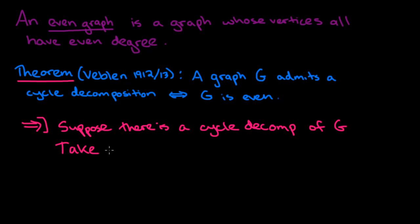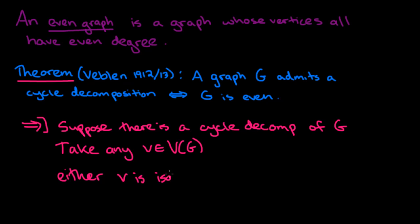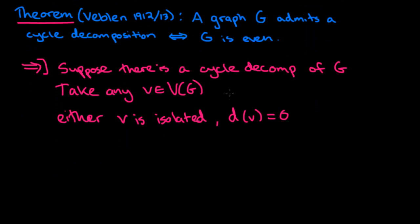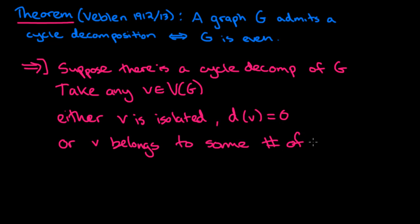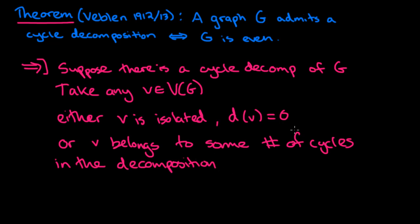Take any vertex in the graph. We're going to look at the degree of this vertex. Either V is isolated — because we didn't say whether or not the graph was connected, so it could be disconnected — in which case the degree of V is zero. Or, if it's not isolated, it's going to have to lie on some cycles. It could belong to only one cycle or to many cycles. Let's say that K is the number of cycles in the decomposition that V belongs to.